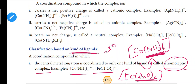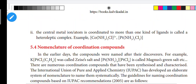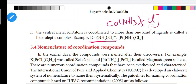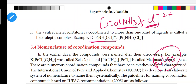That is known as a homoleptic complex. For a heteroleptic complex, there is more than one type of ligand. For example, Co(NH3)5Cl with 2 plus charge — here NH3 is one type of ligand and Cl is another type of ligand. So there are two different types of ligands, making it a heteroleptic complex. Only one type of ligand means homoleptic; more than one type means heteroleptic.